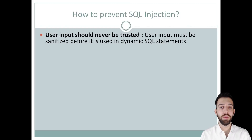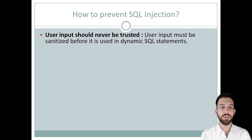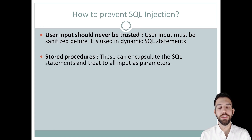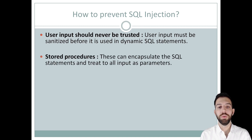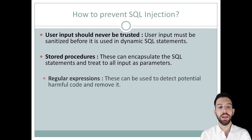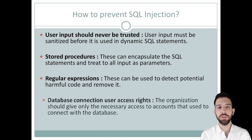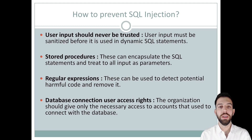An organization can adopt the following policies to protect itself from SQL Injection attacks. First, user input should never be trusted — it must be sanitized before it is used in dynamic SQL statements. Second, they can use stored procedures, which encapsulate SQL statements and treat all user input as parameters. Third, they can use regular expressions to detect harmful code and remove it. Finally, the organization should give only necessary access to accounts that can connect to the database.